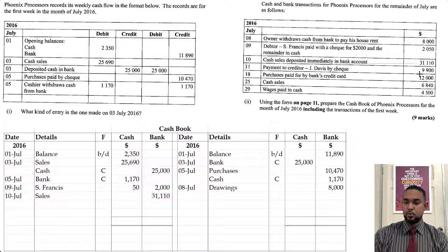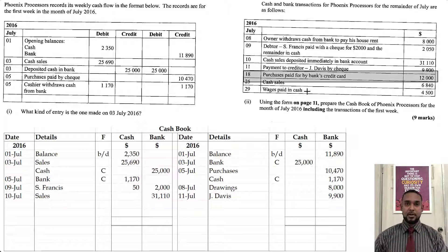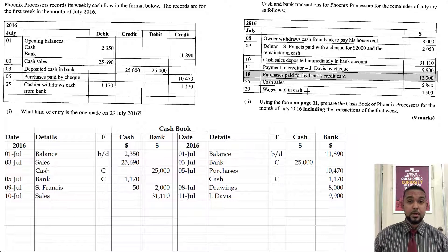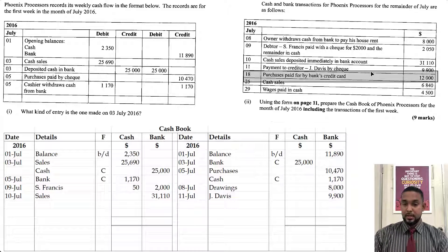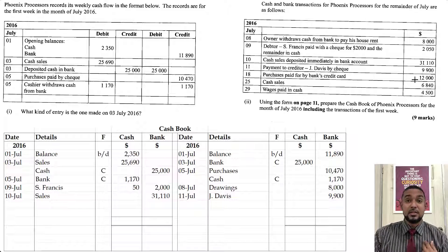Next, payment to creditor Jay Davis — $9,900. On the credit side, because if you make a payment your bank account is decreasing, you're going to credit bank. Where did the money go? It went to Jay Davis. Next — purchases paid for by the bank's credit card. When you make a payment with a credit card, it affects neither your cash nor your bank account. Using a credit card is like taking a loan from a bank or credit card company to pay for something, and then you pay back your credit card bill at the end of the period. So your bank account is not immediately affected — I would not put this transaction in the cash book.